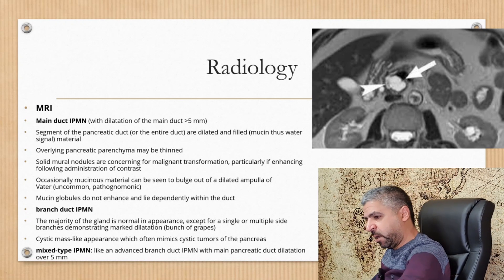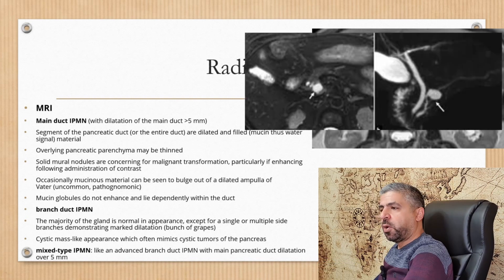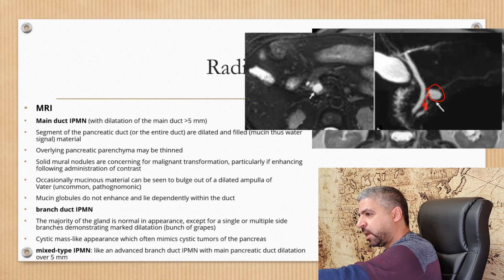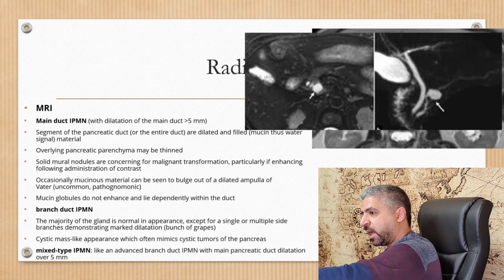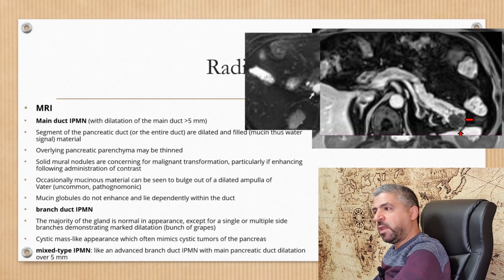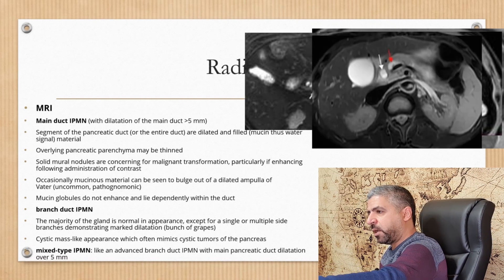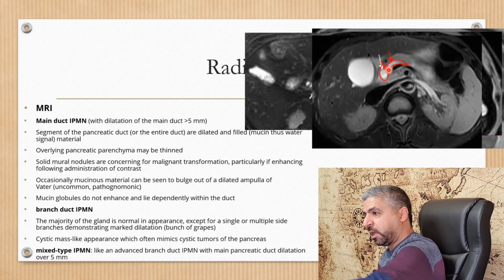On MRCP, this characteristic cystic lesion with thinning of adjacent pancreatic parenchyma is clearly connected with the main pancreatic duct, confirming IPMN. The duct is dilated more than 5 mm — this is a main duct IPMN. A main duct IPMN in the tail of the pancreas on T1 post-contrast shows a cystic lesion in the tail with thinning of the rest of the parenchyma. On T2 fat-saturated images, the main pancreatic duct is dilated more than 5 mm, suggesting IPMN.